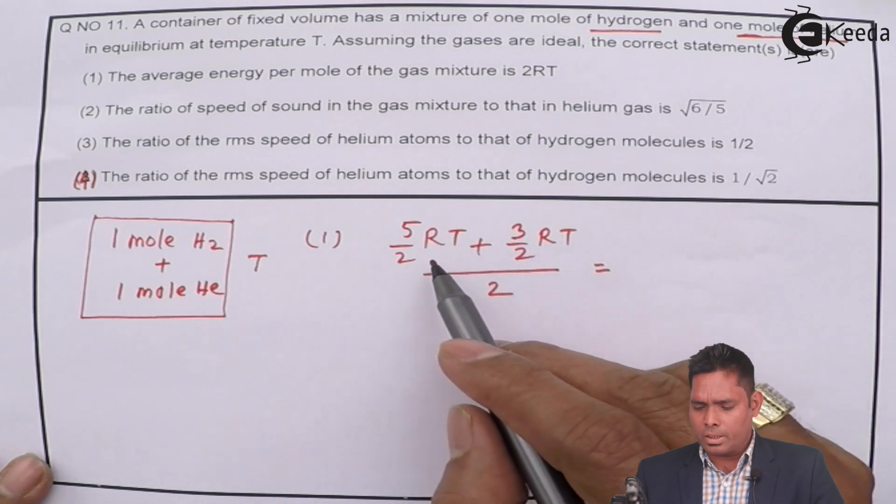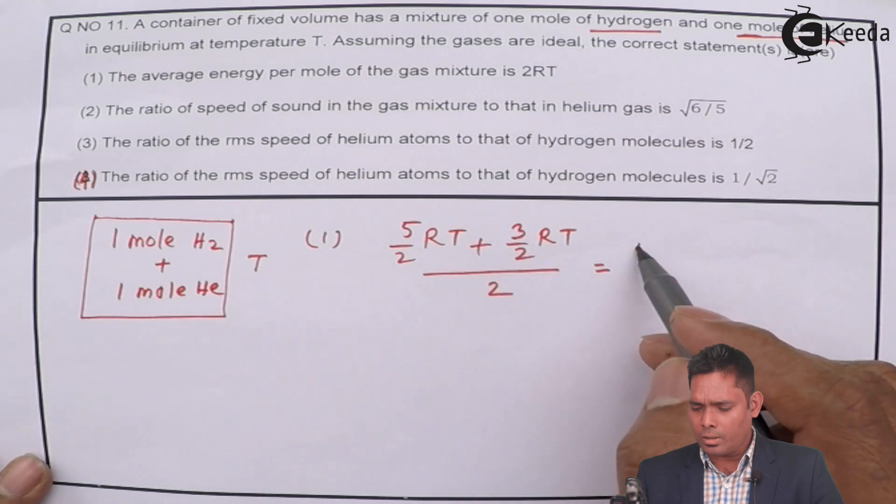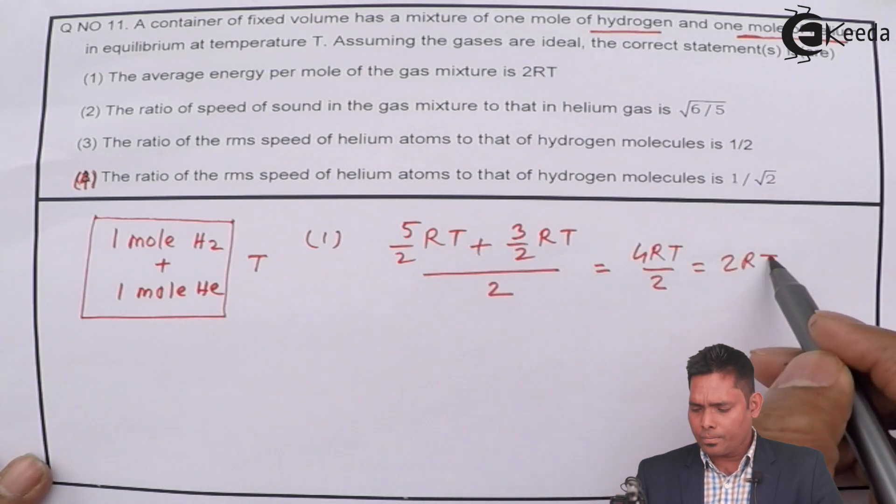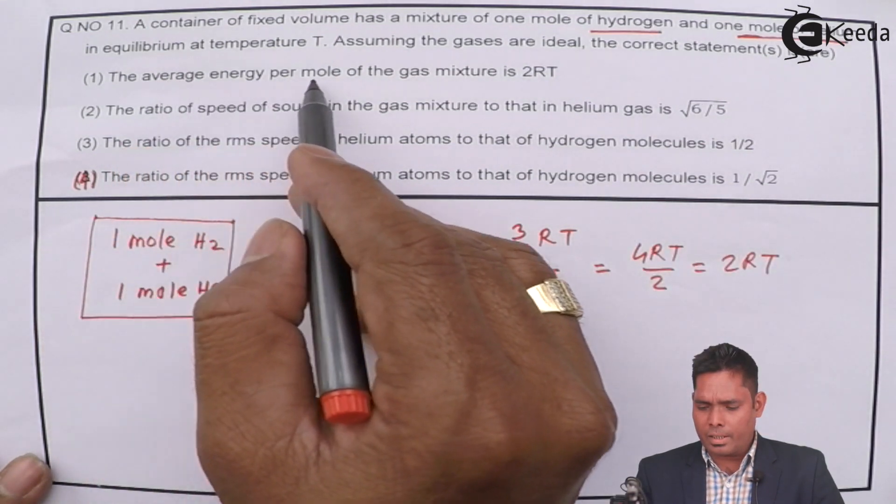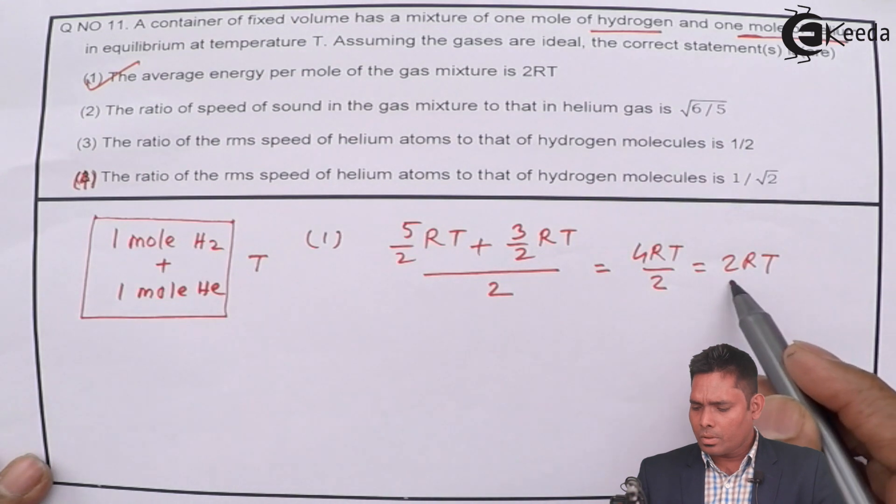So here it is 5 plus 3, 8/2 = 4. So 4RT divided by 2, this is 2RT. The average energy per mole of the mixture is 2RT. This is correct. It is 2RT.